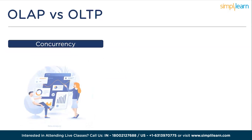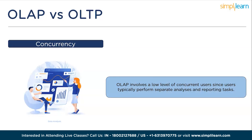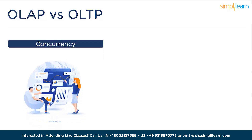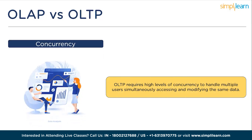The eighth point is concurrency. OLAP involves a low level of concurrent users, since users typically perform separate analysis and reporting tasks that emphasize analytical activities rather than concurrent transactional processing. OLTP requires a high level of concurrency to handle multiple users simultaneously accessing and modifying the same data, focusing on maintaining data consistency and isolation among concurrent transactions.